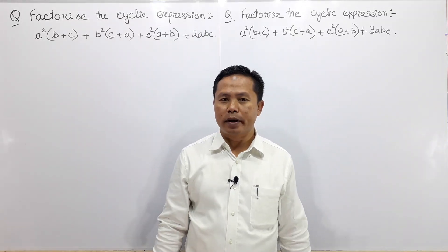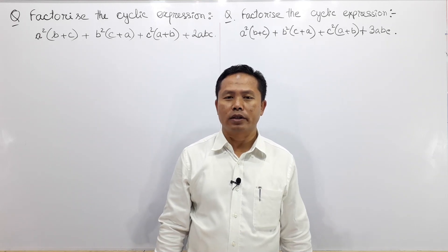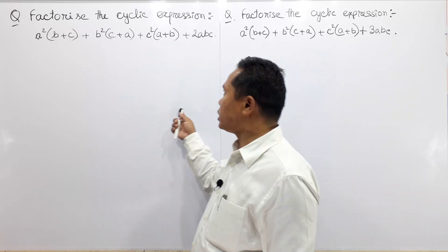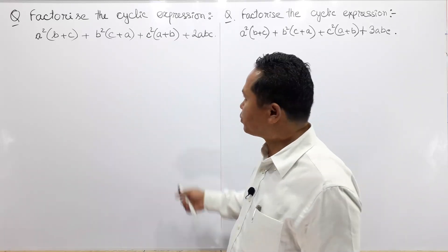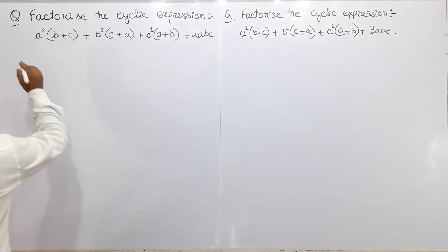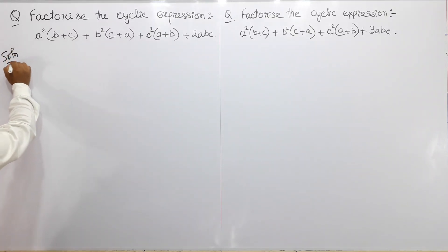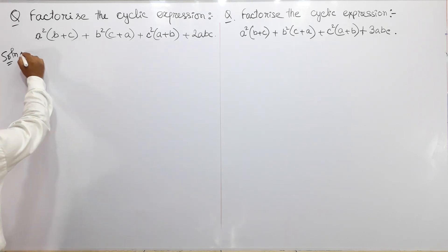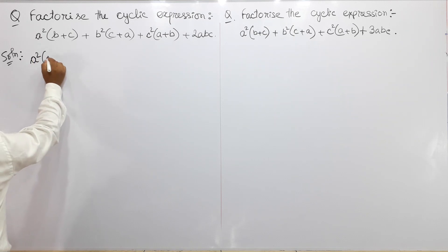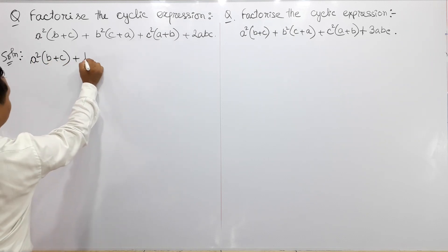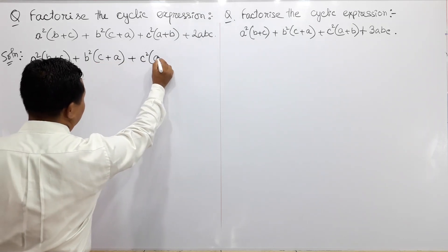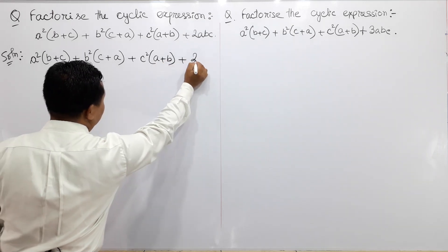This is the subject of factorization. We are going to do the solution. The expression is: A squared B plus C, plus B squared C plus A, plus C squared A plus B, plus twice ABC.